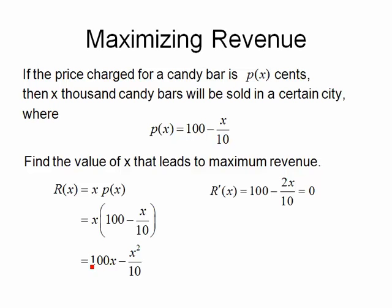So the derivative of 100x is 100. If I think of this -x²/10 as simply being -1/10 x², the derivative of x² is 2x. 2x times -1/10 gives us -2x/10. Since I'm looking for critical points, I'll set that equal to 0 or find where it's undefined. And we don't have to worry about undefined in this problem because this is a polynomial and polynomials are defined everywhere.